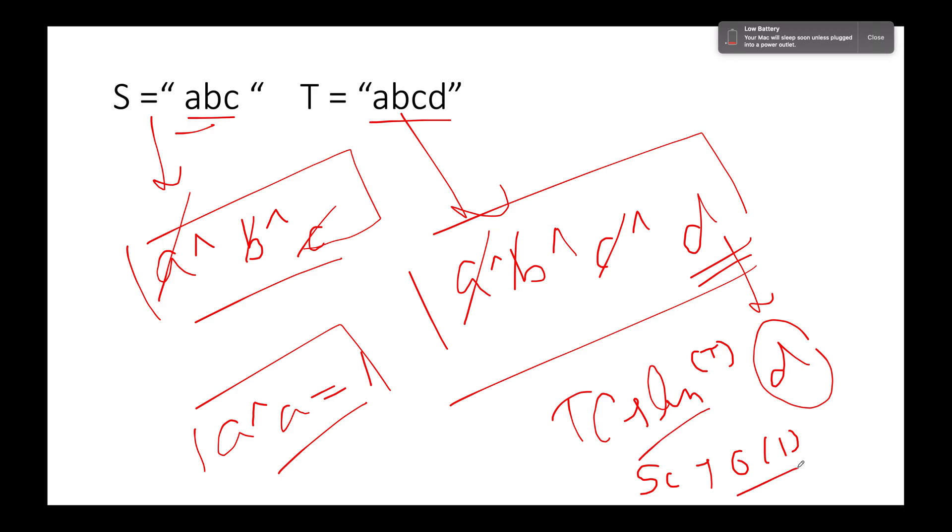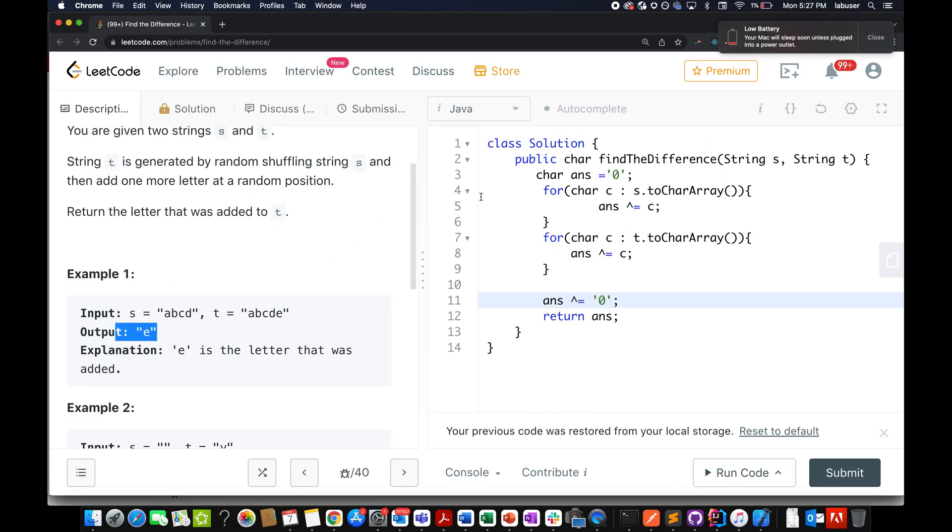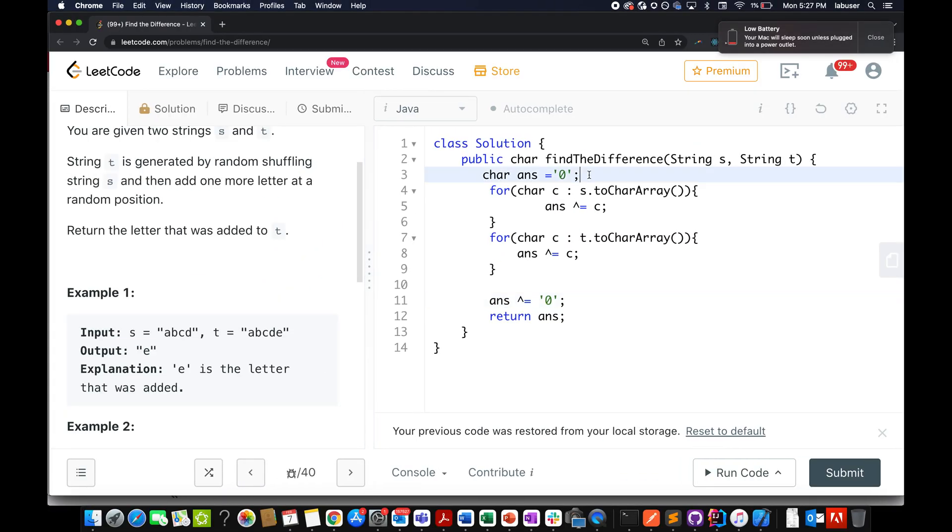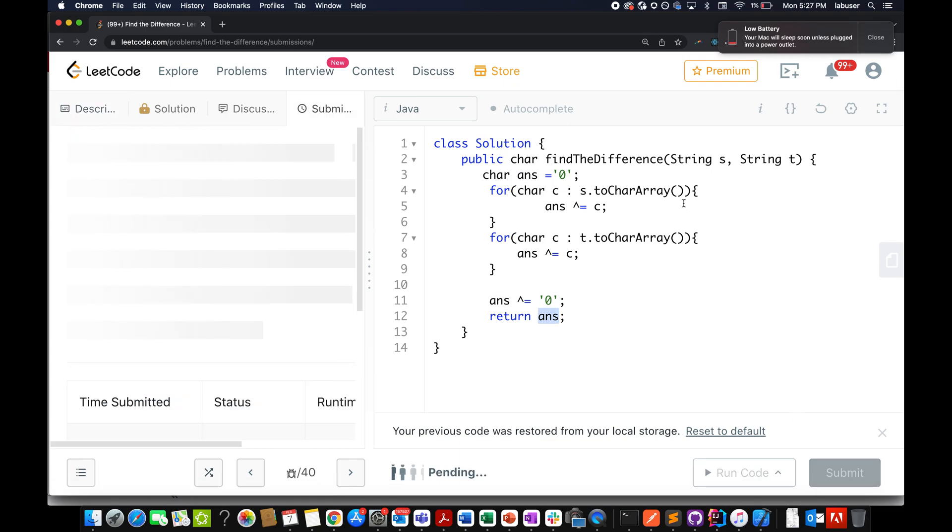Let's quickly walk through the coding section and conclude this up. I am showing you the XOR approach. You can code the frequency approach by yourself. Here I have initialized the answer character to zero. I iterate through the S loop. I XOR answer with the current character. Similarly, I continue doing the XOR for the T array as well, the T character array. In the end, in order to nullify this character up, I again XOR it with zero. And what is left is the extra remaining character. So let's try this up.